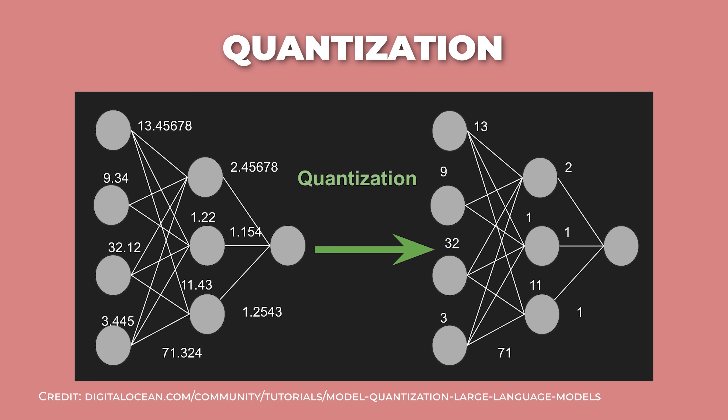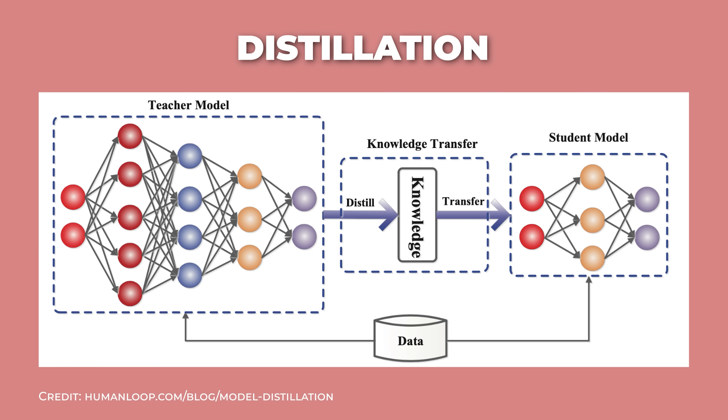Two other ways to make models more practical are quantization and distillation. Quantization is like compressing a high-resolution photo — you store the model's numbers with fewer bits, which makes it smaller and faster while keeping most of the quality. Distillation is different: you train a smaller student model to copy a larger teacher model. The student learns from both the teacher's answers and how confident it is about them. You end up with a faster, lighter model that keeps much of the original's knowledge and capabilities.